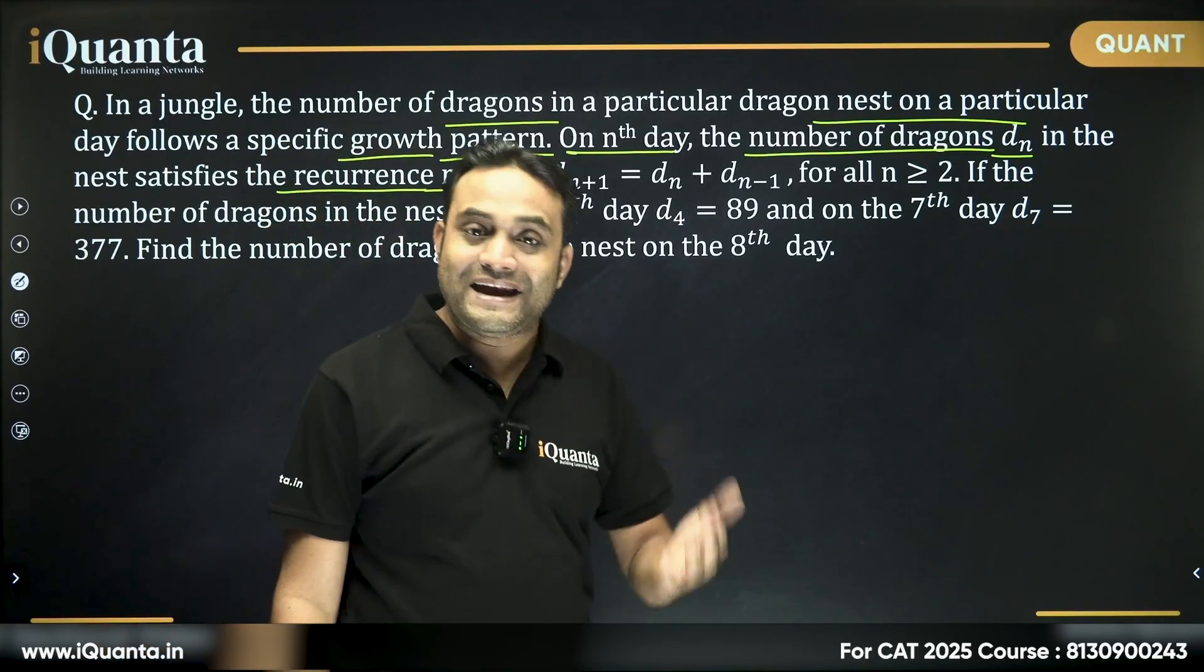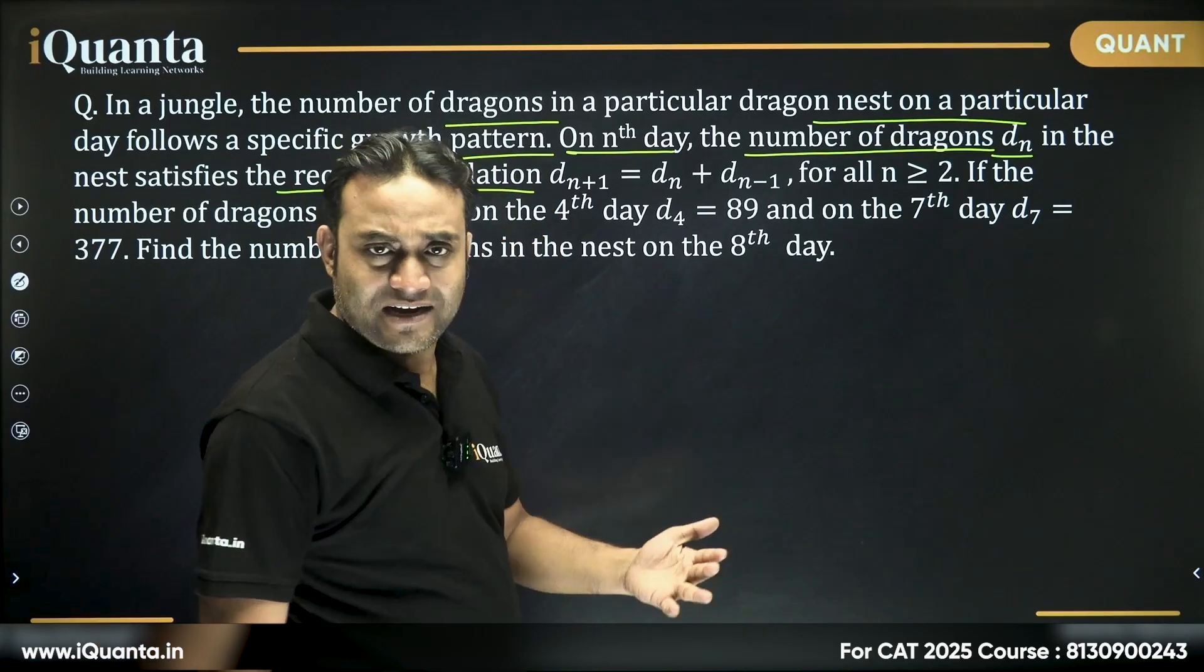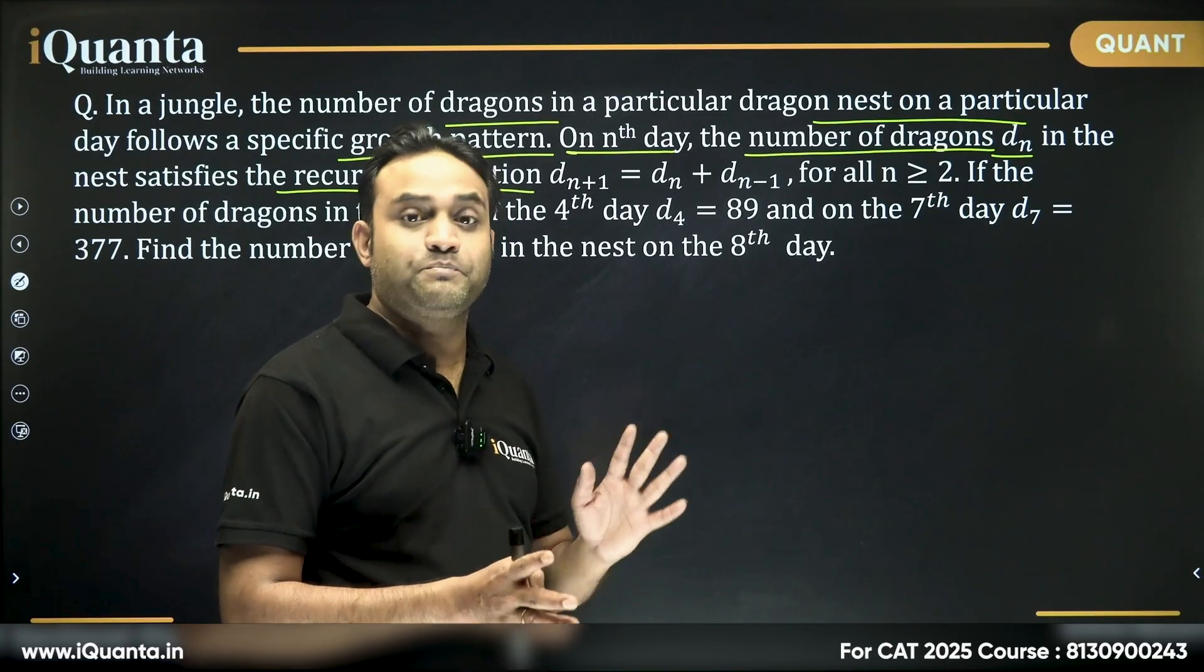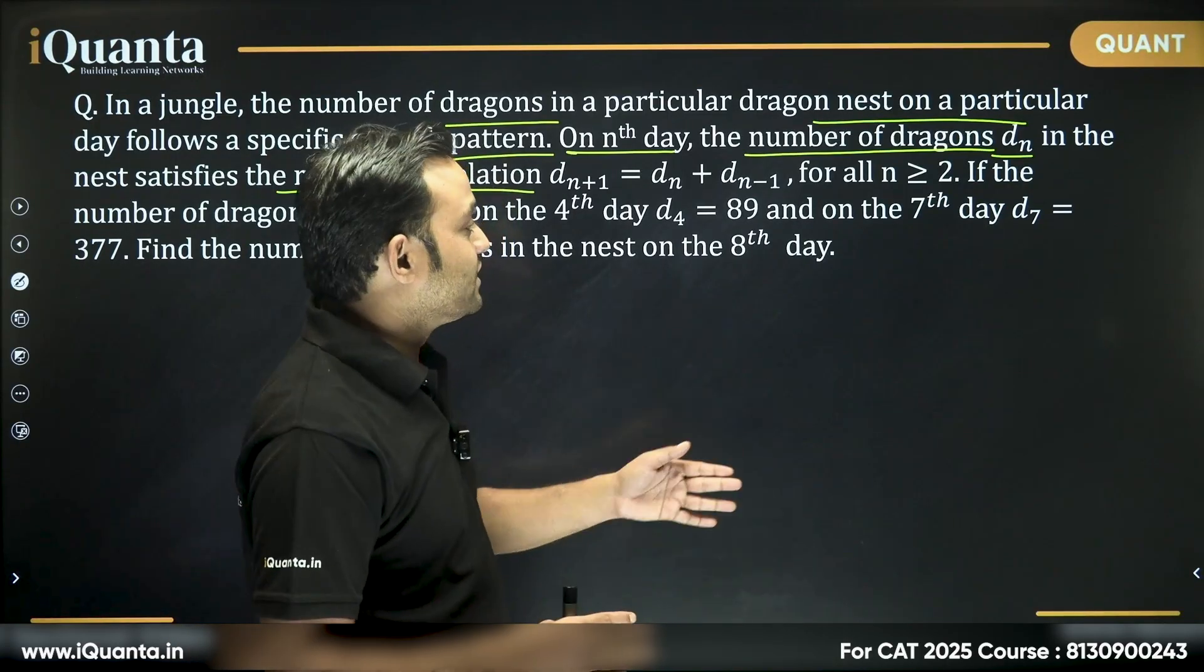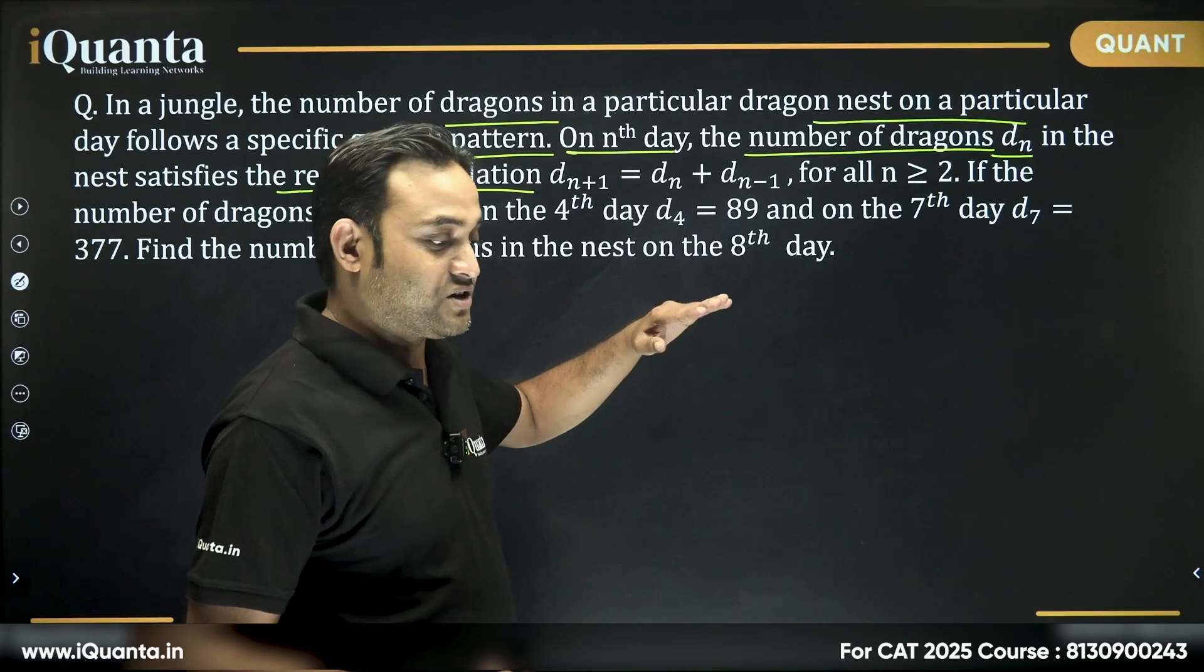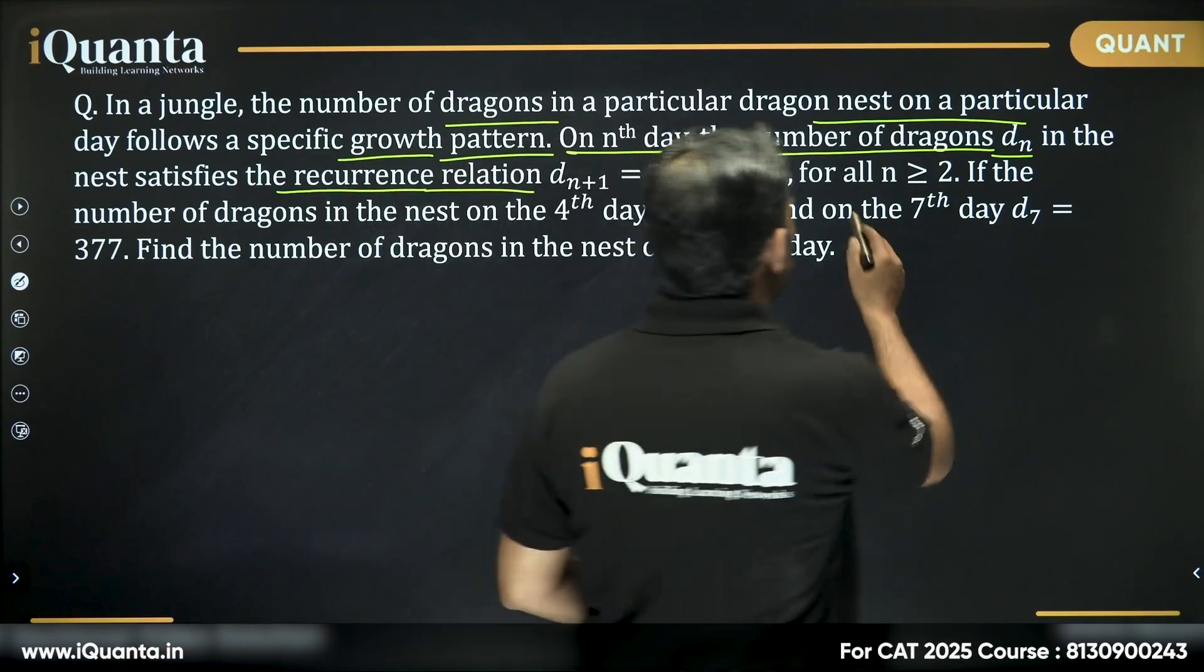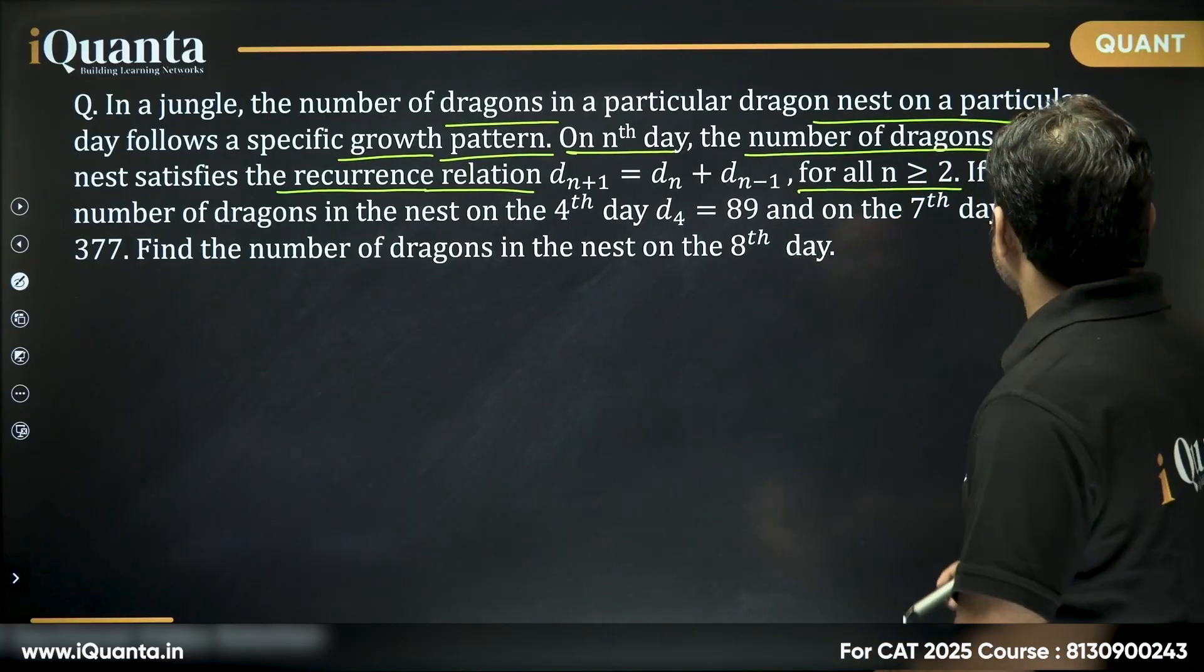Means, on a particular day, nth day, the number of dragons is equal to the sum of the number of dragons in previous two days. On third day, it will be the sum of the dragons on first day plus second day. And so, for n greater than or equal to 2,